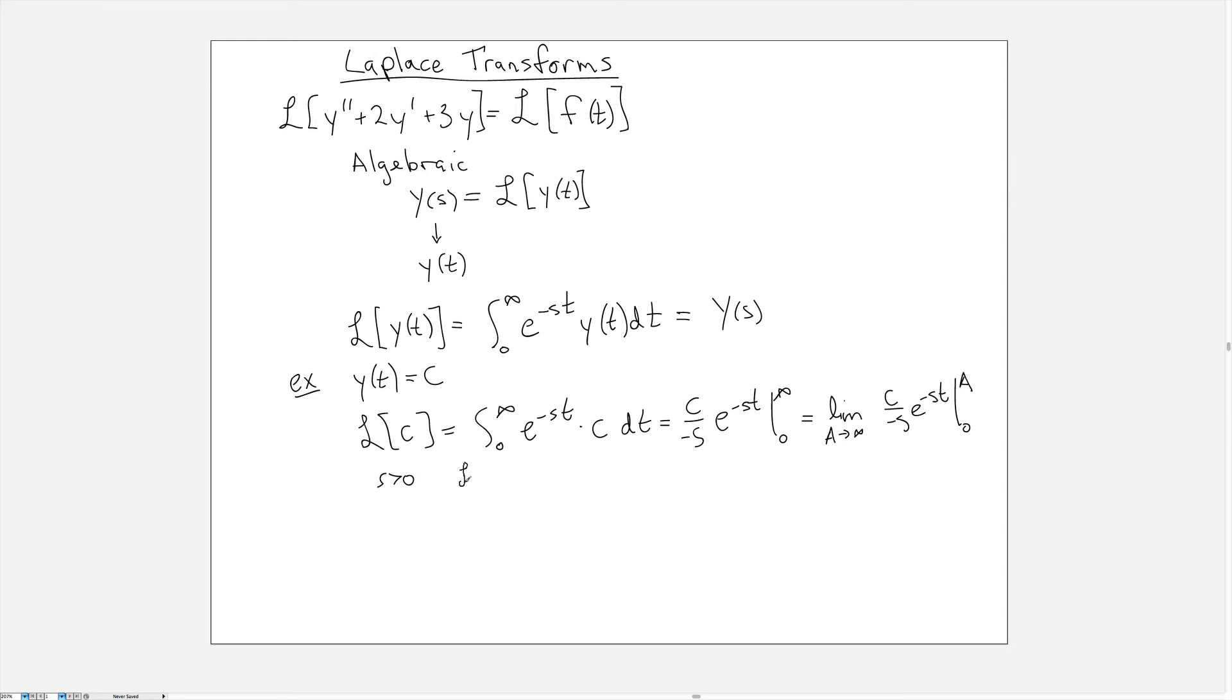We can say that the Laplace transform, I'll now write it as Y of S, capital Y of S, and this is for S values that are positive. This should be equal to the limit as A goes to infinity of C over, and now remember that this A and 0 are being plugged into T, so we still have an S down here but we put up here e to the minus S times A, and then subtract C over minus S e to the minus S times 0.